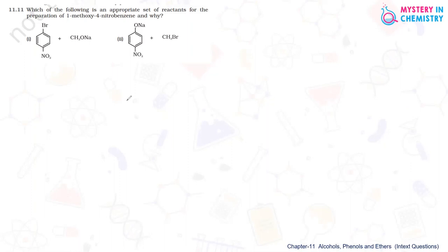For this, let us see what happens in both cases. First of all, we are taking benzene ring with bromine attached and at para position nitro group is present, and it is reacting with sodium methoxide.